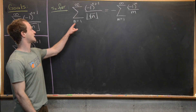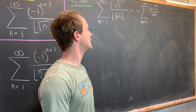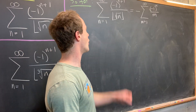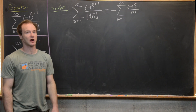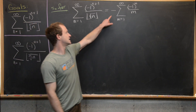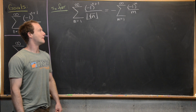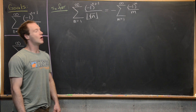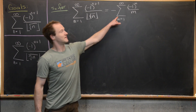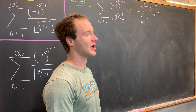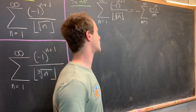On the last board we reduced our goal sum — the sum n equals 1 to infinity of minus 1 to the n plus 1 over the floor of the square root of n — down to the alternating harmonic series: minus the sum m equals 1 to infinity of minus 1 to the m over m. Now we want to evaluate this.